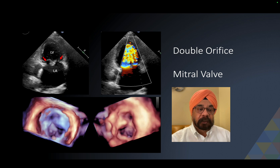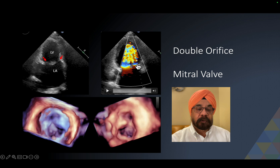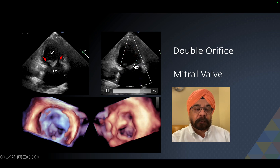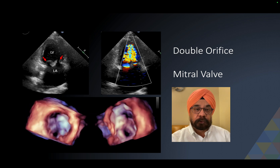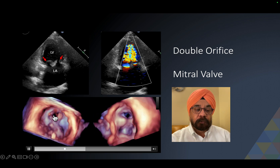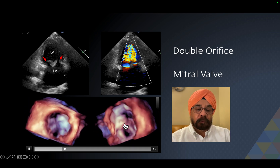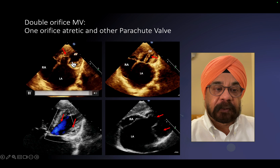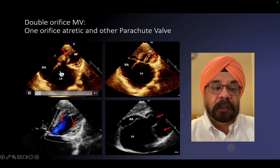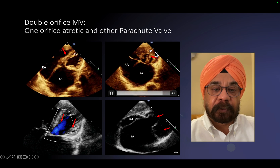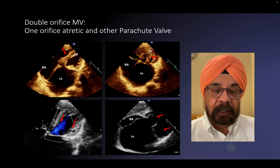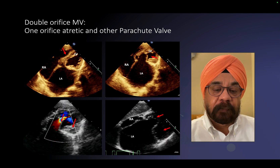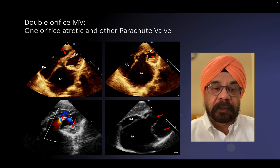Another condition is a double orifice mitral valve. The mitral valve, rather than having a single orifice, can have two orifices — that alone does not qualify as an obstruction, but if one of the orifices is blocked, it would become mitral stenosis. This is an atrial view showing two separate orifices, and here is a ventricular view showing the two orifices. In this patient with double orifice mitral valve, one orifice is not opening at all — it is atretic. So you get a single functioning orifice, and that orifice has a single papillary muscle. This means this case is both a parachute valve and a double orifice. You can clearly see the double orifice in a subcostal view — one orifice is atretic, closed with no flow across it, and only one orifice is opening.